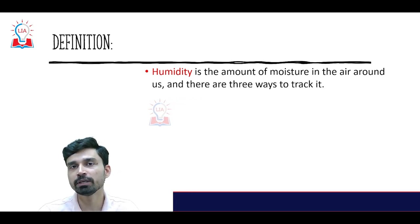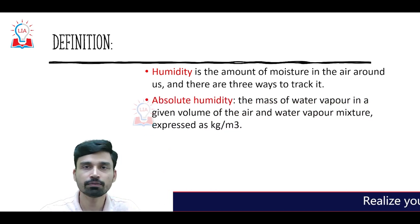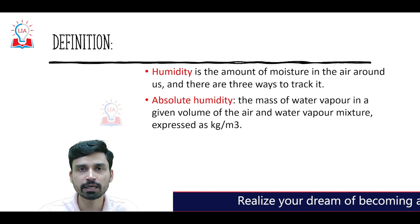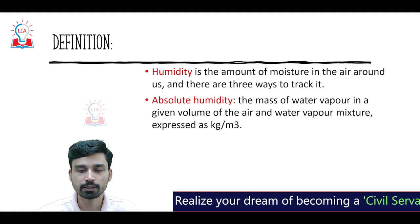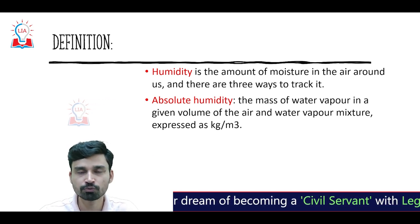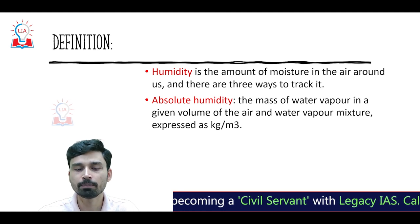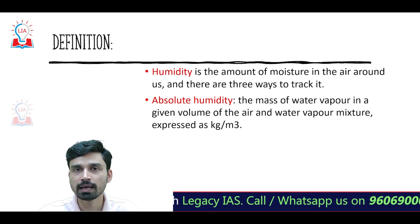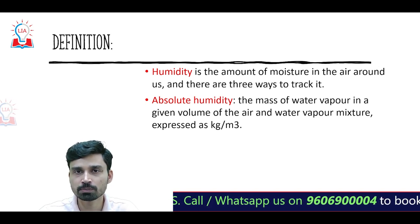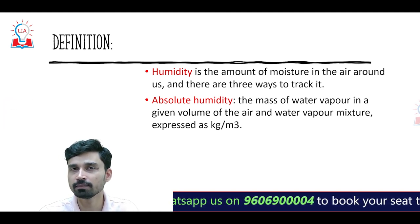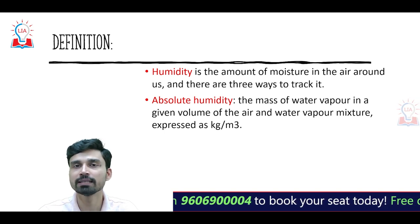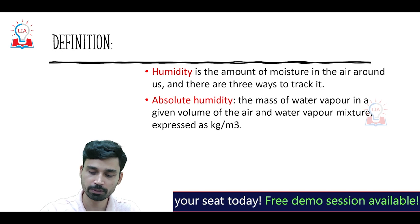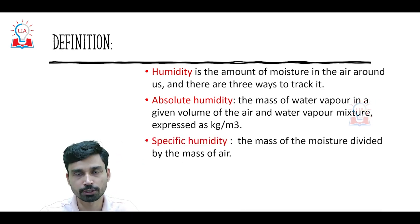Humidity itself can be defined in three different ways. The first method is what we refer to as absolute humidity. Absolute humidity refers to the mass of water vapor, calculated in grams per unit volume of the air parcel — that is, how many grams of moisture are present per unit volume. Its unit is gram per meter cube or kilogram per meter cube.